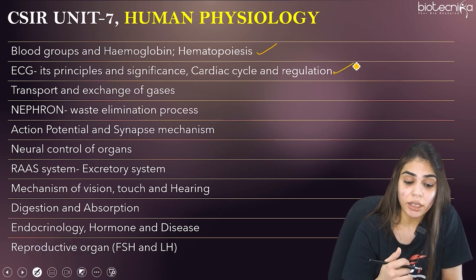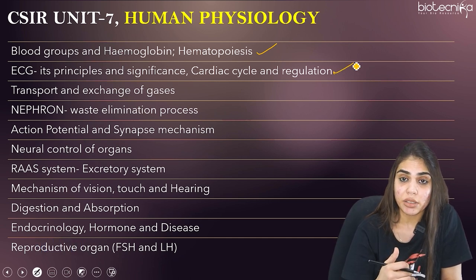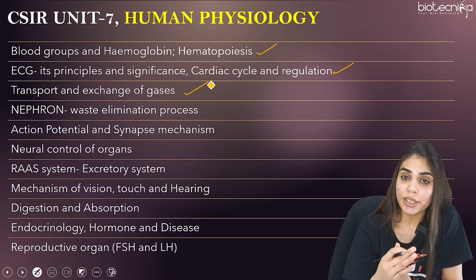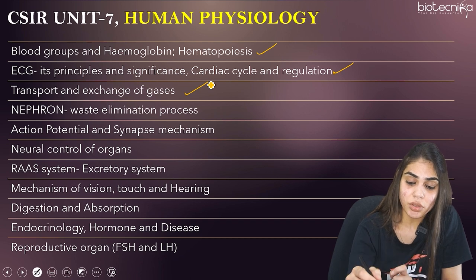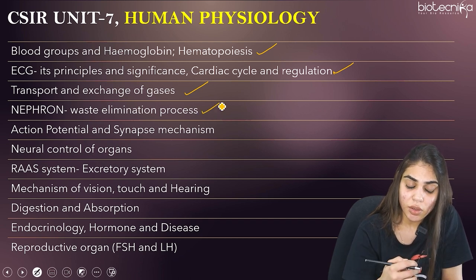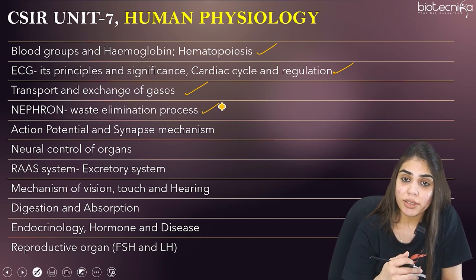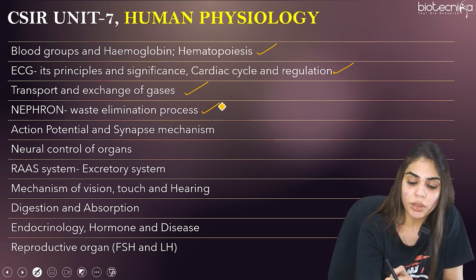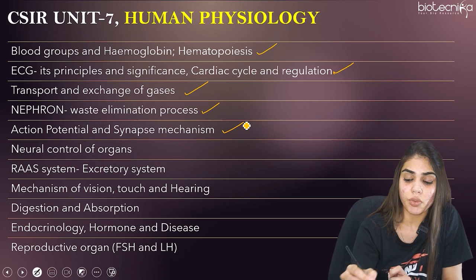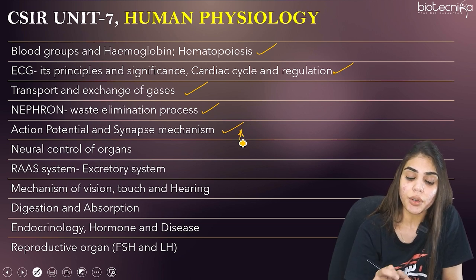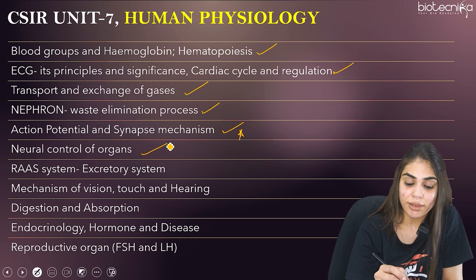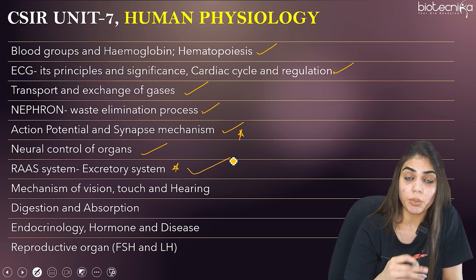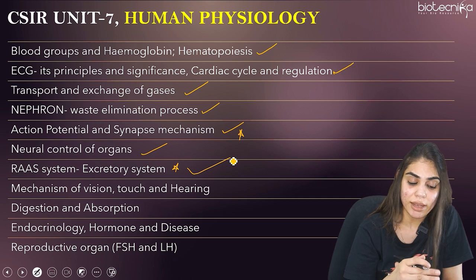Learn about the cardiac cycle, gas exchange in the lungs, and the waste elimination process in the nephron. Also learn how action potentials are generated, the threshold value, and the working of the synapse. Neural control of organs is also important. The RAS system is another very important topic as part of the excretory system — do not skip it.